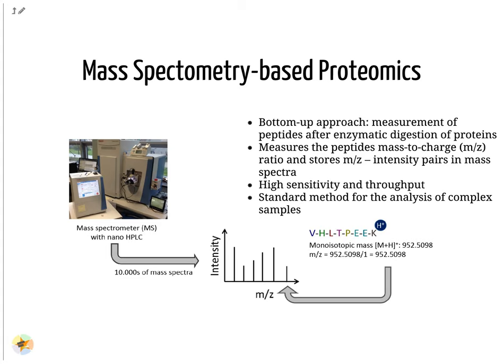Mass spectrometry is the standard method for proteomic analyses of complex samples. In the classical bottom-up approach, proteins are enzymatically digested into peptides. Peptides can be analyzed with high sensitivity and throughput in a mass spectrometer (MS). The peptide mass is measured as mass-to-charge (m/z) ratio. Only charged peptides can be measured in the MS; tens of thousands of mass spectra are generated per sample. Each spectrum consists of many m/z and intensity pairs.